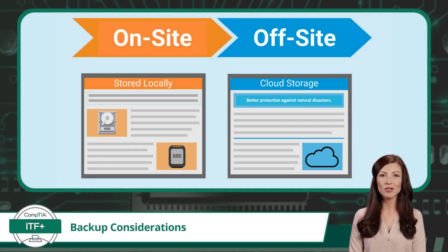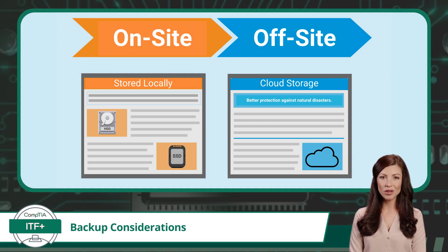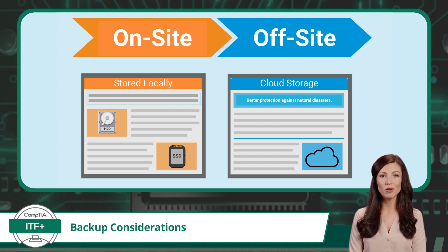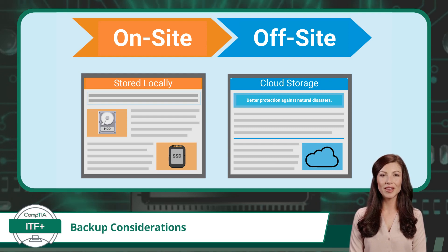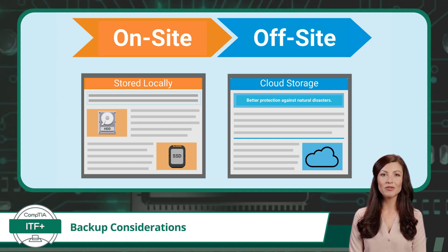Now, the question arises: where should these backups reside? One viable avenue is locally stored backups, also known as an on-site backup. The advantages of this method include speed, as restoring from a local source is typically swifter, and grants users direct oversight over their backup processes and data. However, it's not without its drawbacks. Local backups are susceptible to physical damage from unforeseen natural disasters like fires or floods, and can also be targets for theft. Additionally, the finite space of physical storage devices can pose limitations.